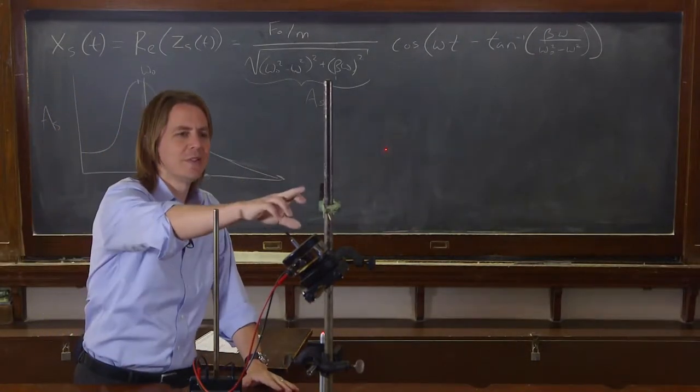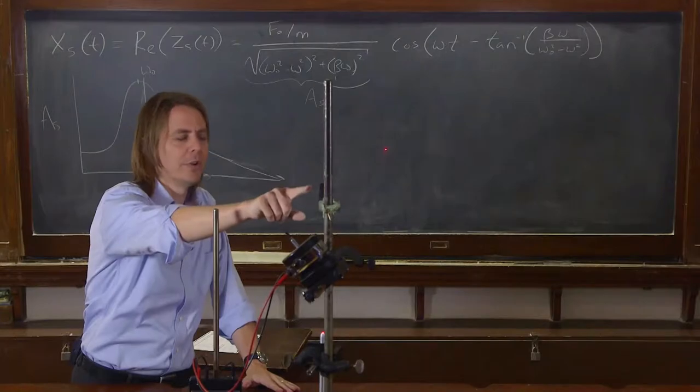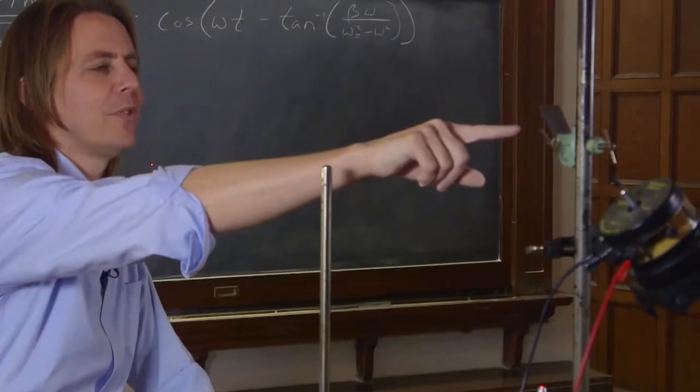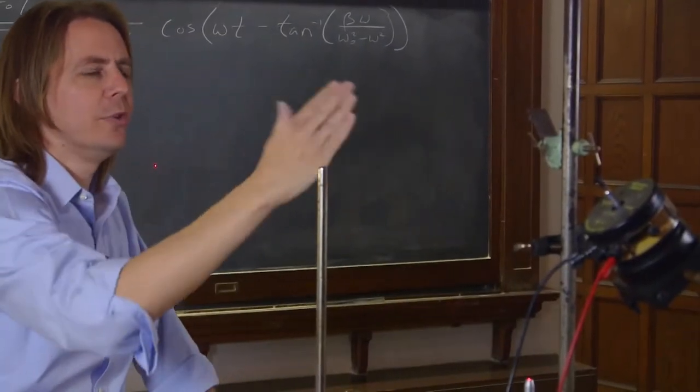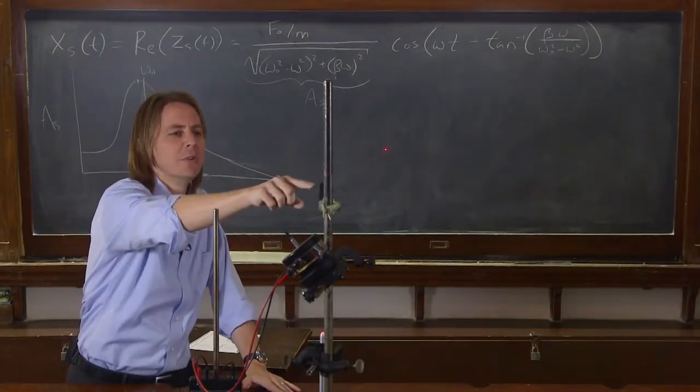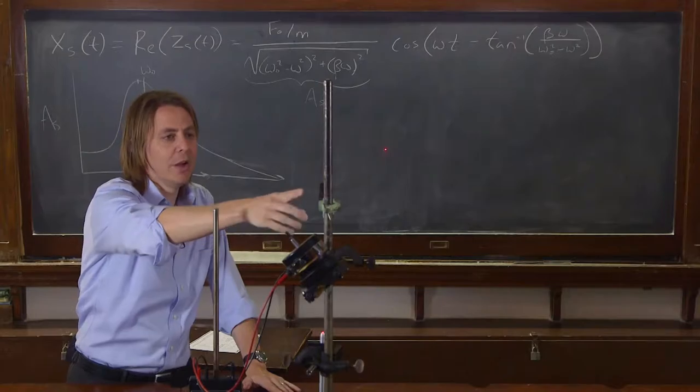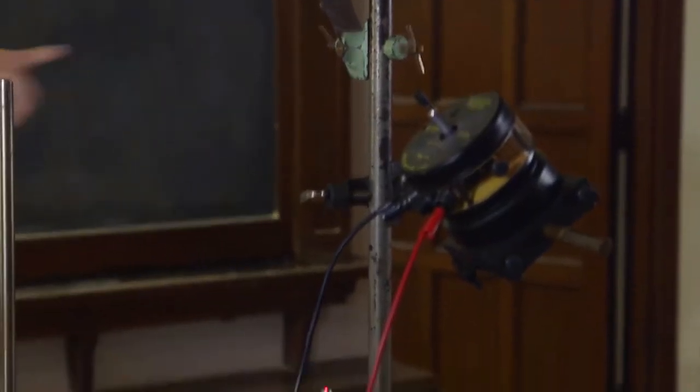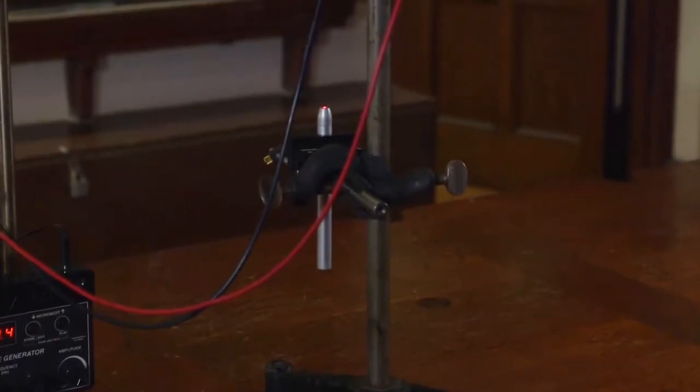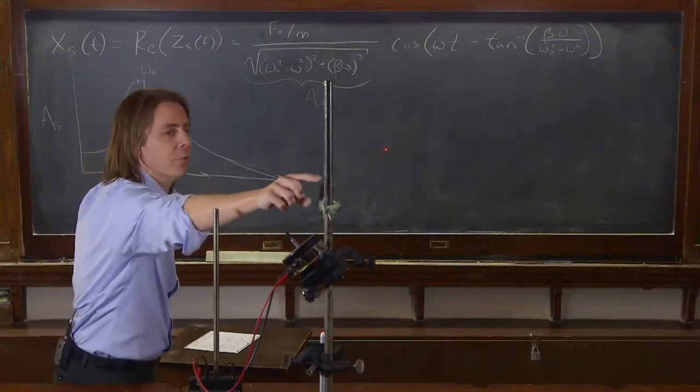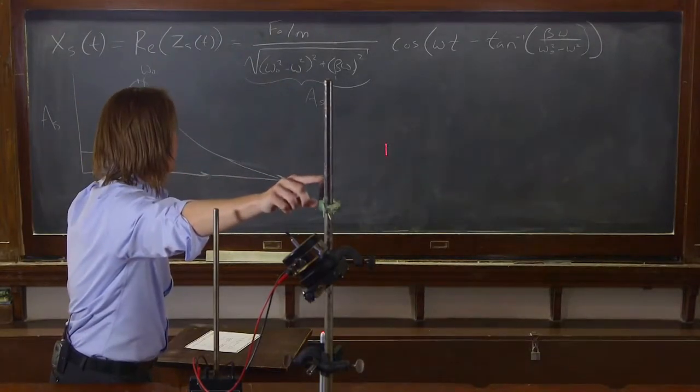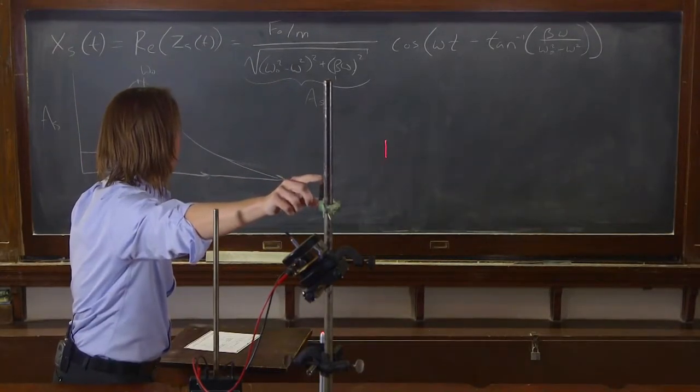So this is our oscillator. It's a mass, which is a mirror, on a little steel shim, which just means a thin, springy piece of steel. So that's the mass on the spring. And the laser is bouncing off the mirror so you can see its position really exaggerated. So if I move this around, you can see the laser beam deflects.